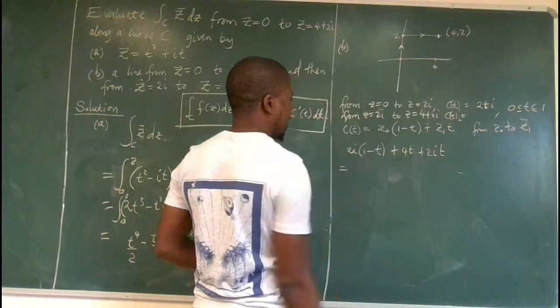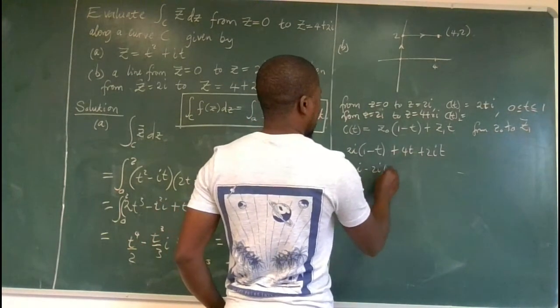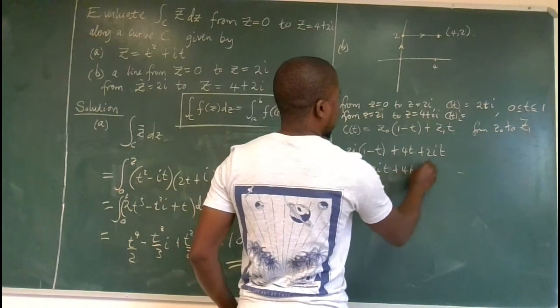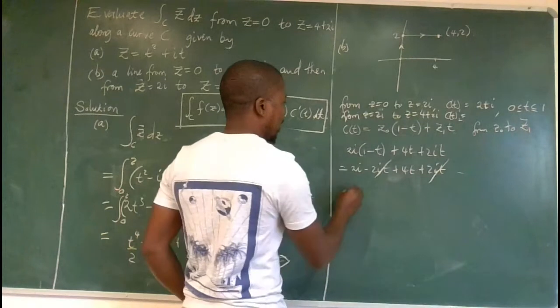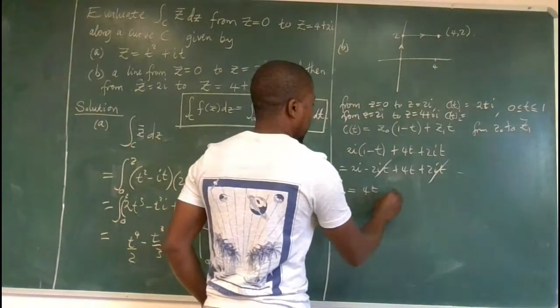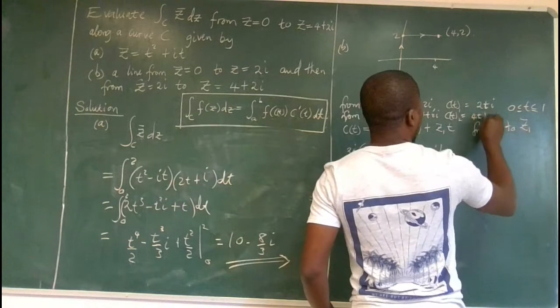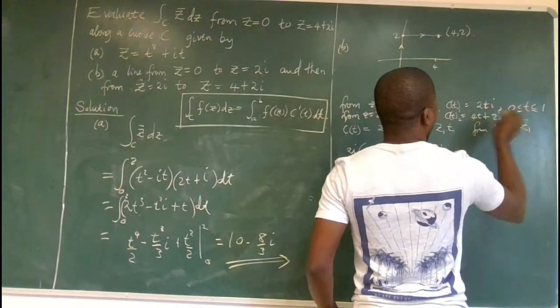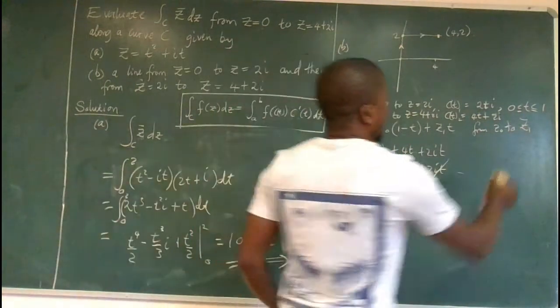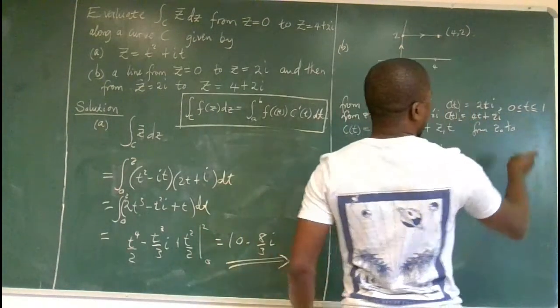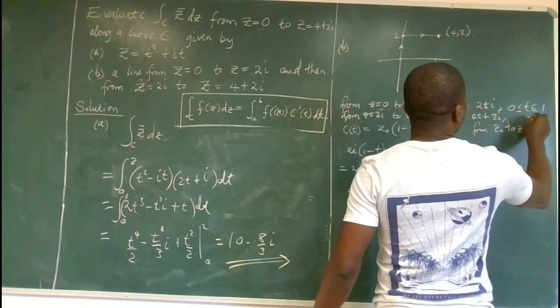Let's simplify this. It will be 2i minus 2i t plus 4t plus 2i t. This 2i t will cancel with that and will remain with 4t plus 2i. So this is the function, 4t plus 2i. So in the same manner, let's determine the range for t.